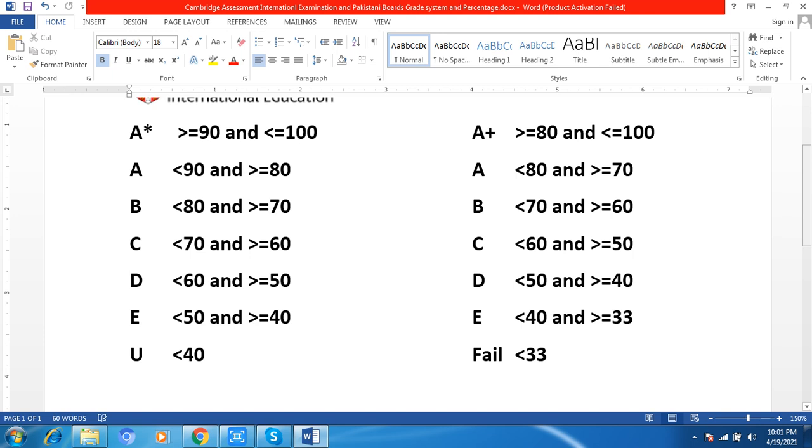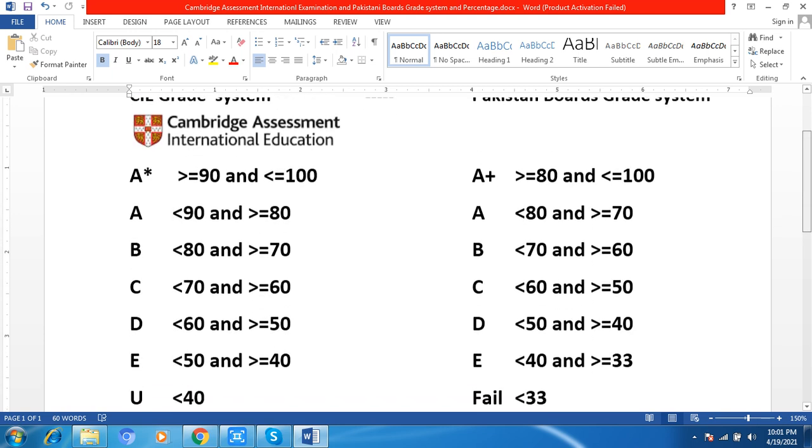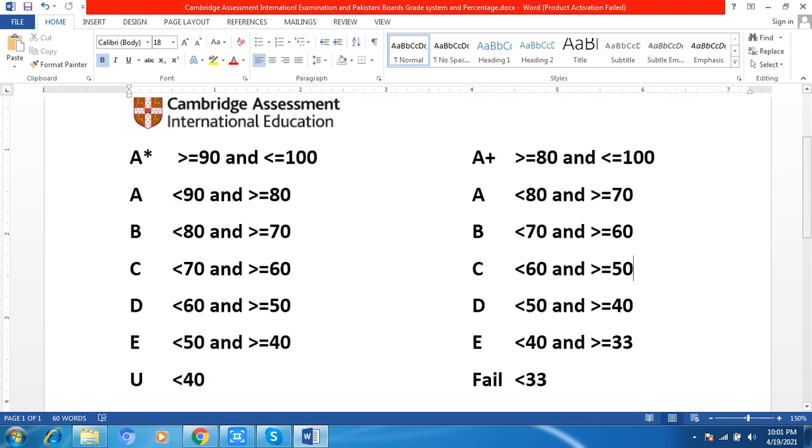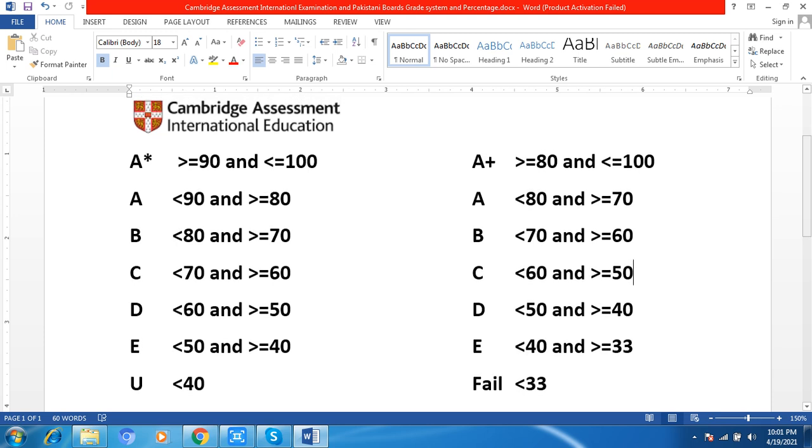In Pakistani board, if you want to achieve A+, greater than or equal to 80 and less than or equal to 100. For A grade, less than 80 and greater than or equal to 70. For B grade, less than 70 and greater than or equal to 60.